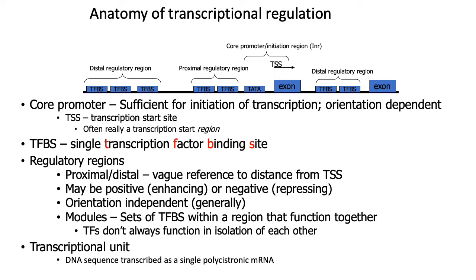In terms of transcription factor binding sites, they are located in the proximal promoter and the core promoter, but oftentimes they're also located far upstream or far downstream of the target transcription start site. They can be both enhancing and repressing of target gene expression, and they're oftentimes orientation independent in the sense that they can sit on either strand and still function and target the same gene.